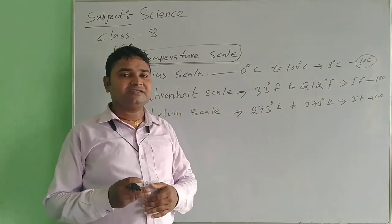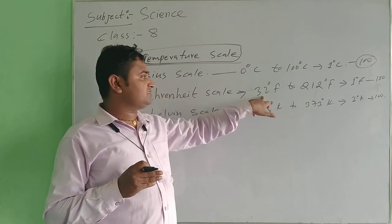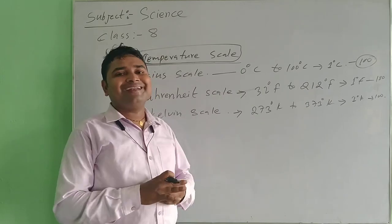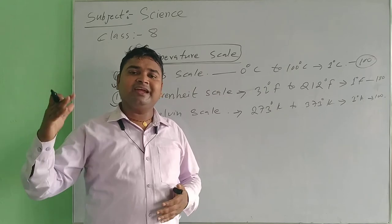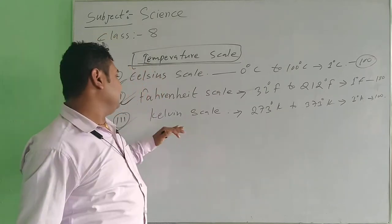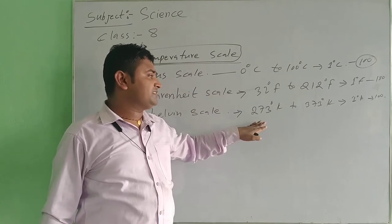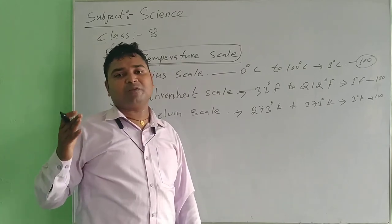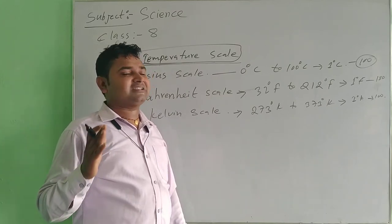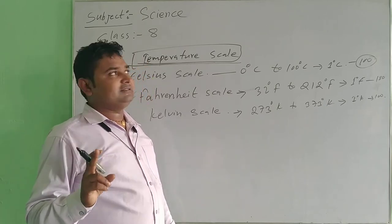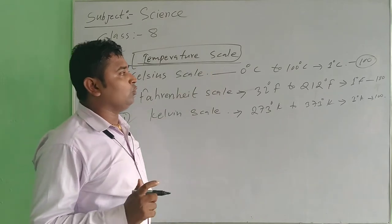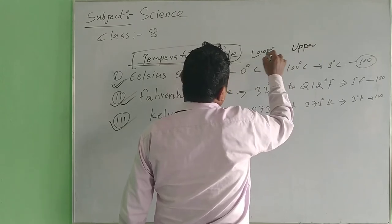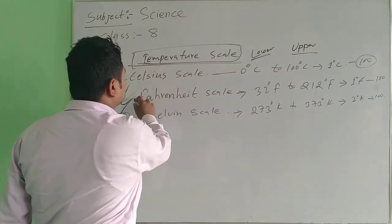In Fahrenheit scale, the lower fixed point is 32 degree Fahrenheit and the upper is 212 degree Fahrenheit. There are 180 equal parts divided. Similarly in Kelvin, the lower point is 273 K and the upper is 373 K, divided into 100 equal parts, and each equal part is 1 Kelvin. These are the three temperature scaling systems: Celsius, Fahrenheit, and Kelvin.